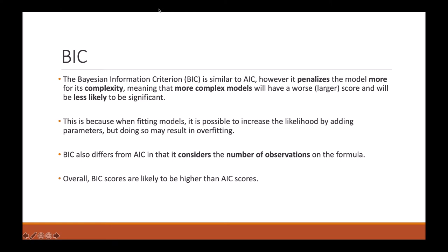As I've previously introduced, another method of selection is BIC. BIC is similar to AIC; however, it penalizes the model more for its complexity, and this means that more complex models will have a worse—so a larger—score, and that means it will be less likely to be significant.